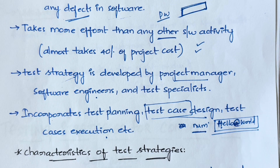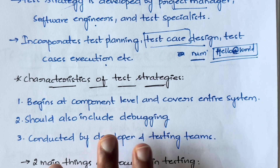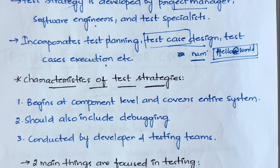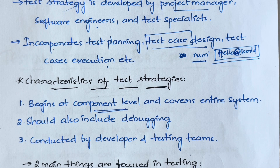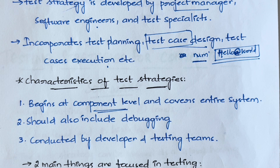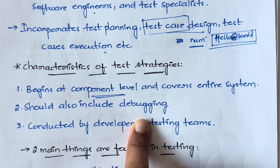The characteristics of a test strategy are that it should begin at a component level and cover the entire system. Each individual component and functionality should be tested, and it should gradually keep increasing in scope — individually testing everything, and then on a bigger scale testing whether everything works together. It should also include debugging, and is usually conducted by both developers and testing teams.